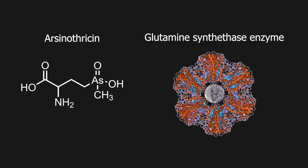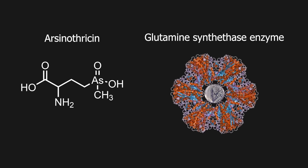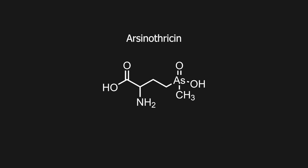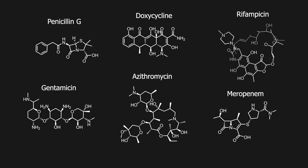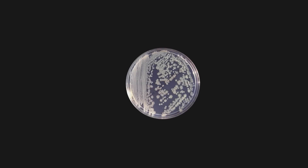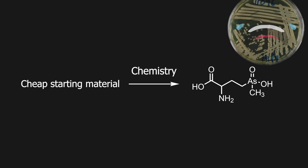Humans also possess the glutamine synthetase enzyme and use it for the same purpose, but the human enzyme is slightly different, making it a lot less affected by arsenothricin. New and effective antibiotics like this are important in combating the increasing amount of bacteria that are becoming resistant to currently used antibiotics. It is expected that we will eventually run out of options to treat many different infections, as antibiotic resistance develops faster than we currently develop antibiotics.